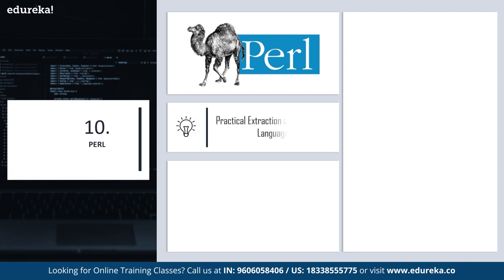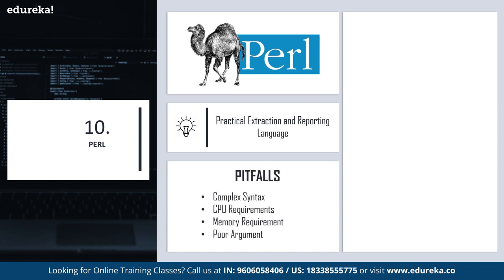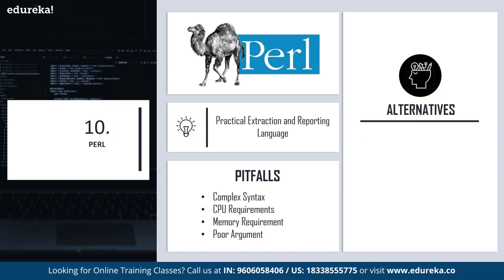On the 10th position we have Perl, which stands for Practical Extraction and Reporting Language. Perl is a high-level language used for general purpose programming. The reasons why it has become less popular recently include its complex syntax, high CPU requirements, large memory requirements, and poor structuring in arguments.